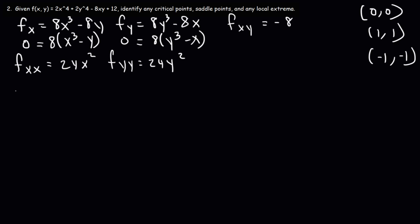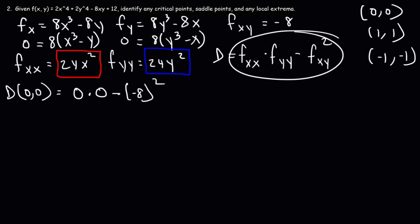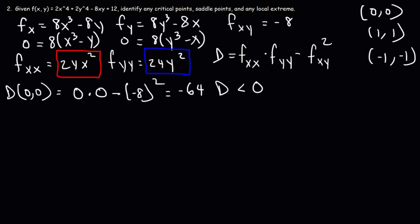Now we have everything we need. D is the second partial derivative with respect to x times the second partial derivative with respect to y, minus the mixed derivative squared. Let's evaluate D at the first point, (0, 0). At the origin, f double x is 24 times 0 squared, which is 0. f double y is also 0. The mixed derivative is negative 8, so D is 0 times 0 minus negative 8 squared, which gives a negative value. When D is less than 0, we automatically have a saddle point. So the point (0, 0) is a saddle point.